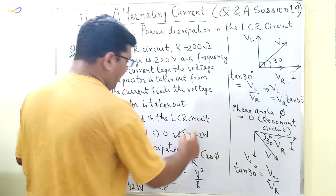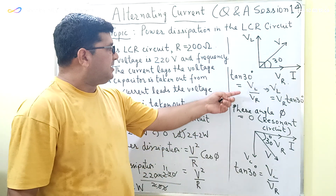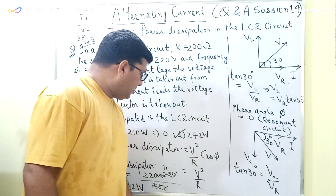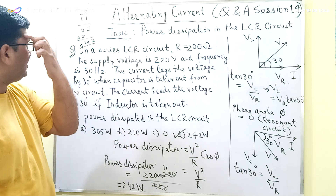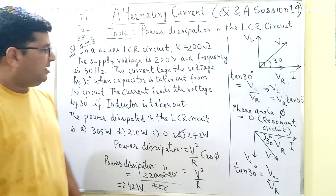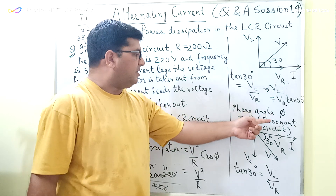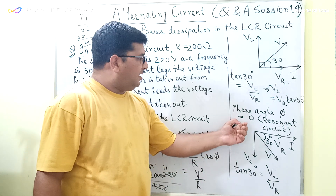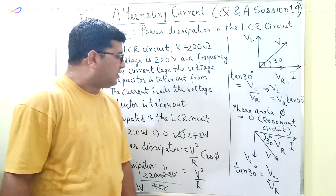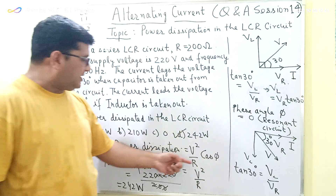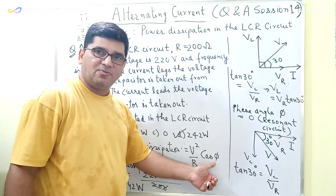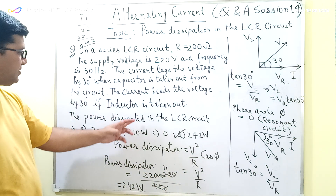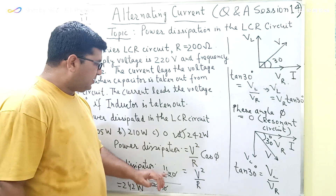The correct option here is D. The most important thing was understanding the phasor diagram. With the phasor diagram we proved that the LCR circuit is a resonant circuit, so the phase angle φ between current and voltage is 0, cos φ = 1, and power dissipation = V² / R · cos φ = V² / R = 242 watts.